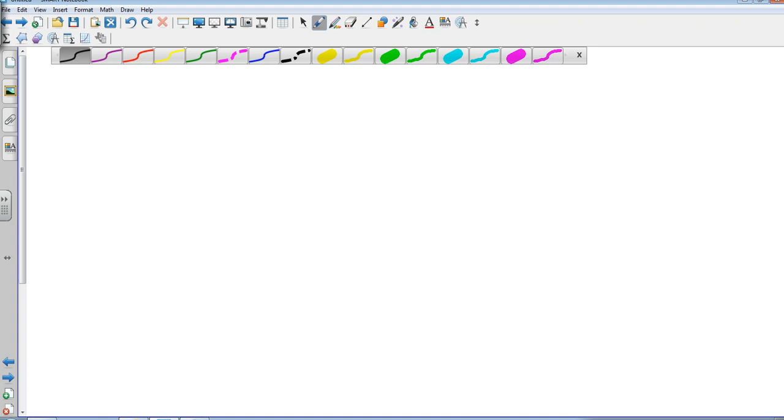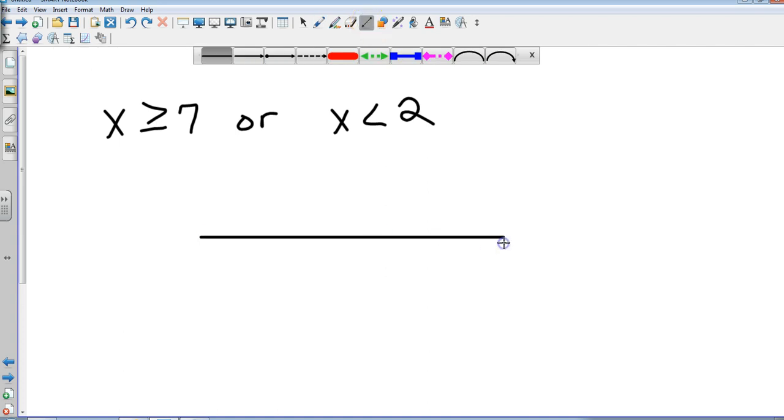So, on one that's an or. On an or, where do you think your arrows are going to go? Opposite directions. Okay? Again, I'm not going to deal with the solving of the equation. We can do that. I'm just giving you answers to look at. So, let's take a look at this one.